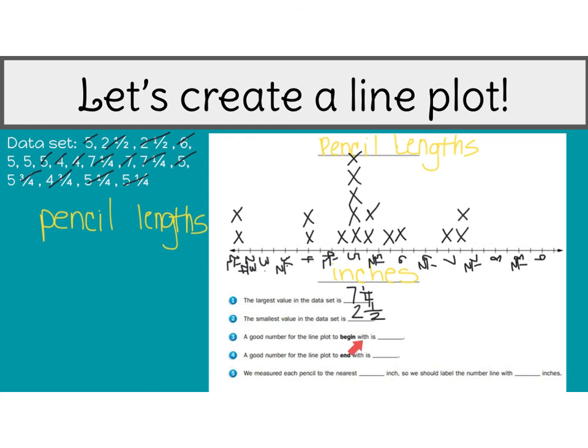And then we're going to go to question three, a good number for the line plot to begin with is, we kind of already did that. So we started with two and one half. And I kind of already talked about that a good number for the line plot to end with is, I ended it with nine. And we measured each pencil to the nearest, and these are to the nearest one fourth of an inch. So we could label the number line with one fourth inches. And then we could go about answering questions like, what was the most common length for pencil lengths? And we could look at that data and we could very quickly say, okay, five inches. That one had the most X's or the most data points with five.